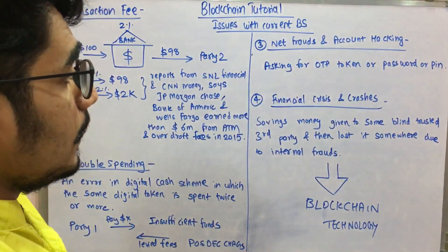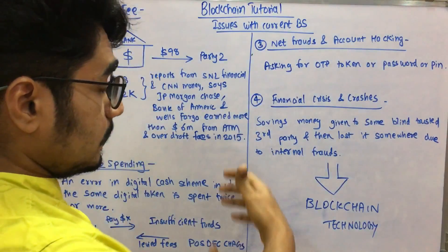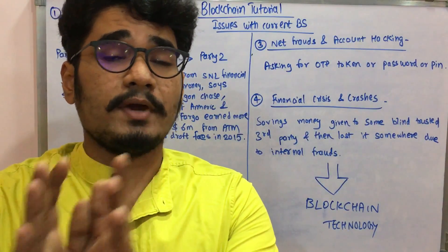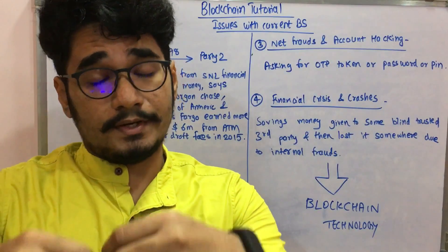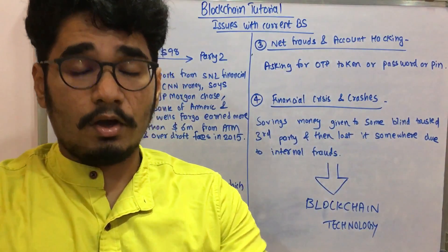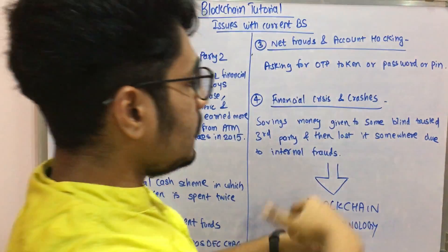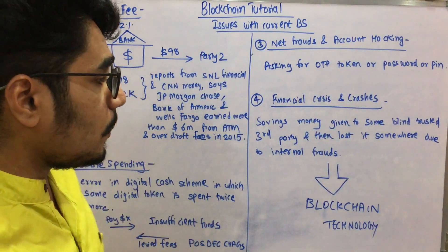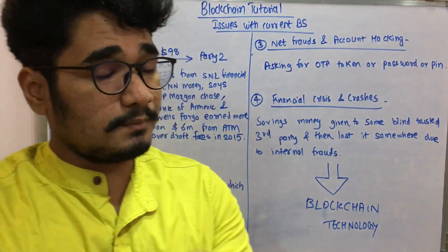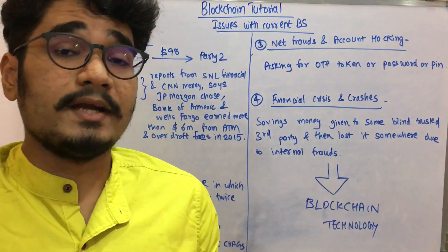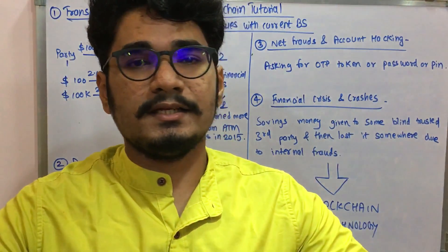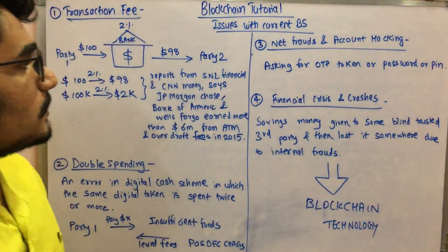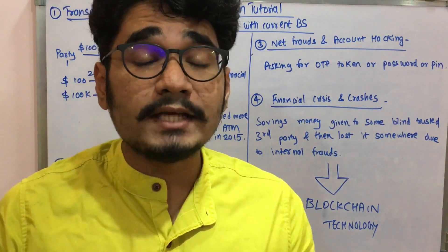Finally, it comes to financial crisis and crashes. For example, if you have saved all your money and instead of depositing it in a bank, you give it to some small-scale organization, all your savings are given to a blindly trusted third party. Then it's lost due to their negligence and internal frauds. This is where a financial crisis comes into picture, and the entire financial empire of that particular customer goes down.